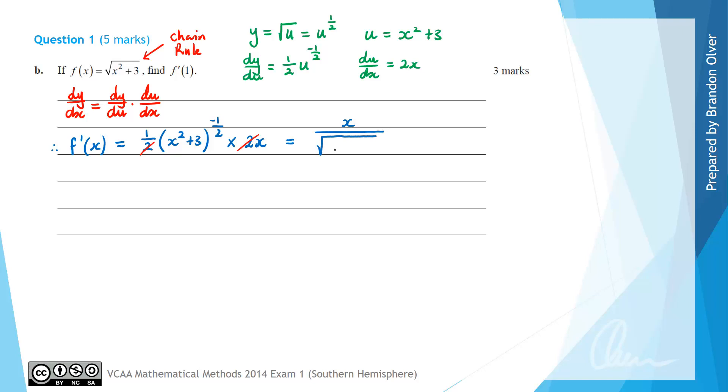so the negative will take it to the denominator, and the half will be a square root, so we'll have x over the square root of x squared plus 3. Therefore when we calculate f dashed of 1, which is what the question asked for, that's the same as 1 divided by the square root of 1 squared plus 3, which is simply equal to 1 divided by the square root of 4, which is equal to a half. So that is the answer to part B of this question.